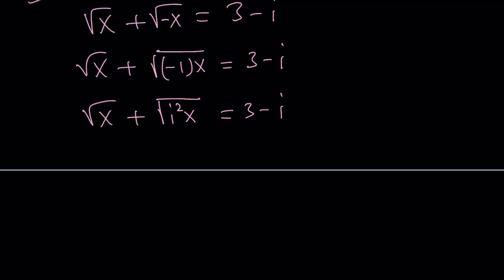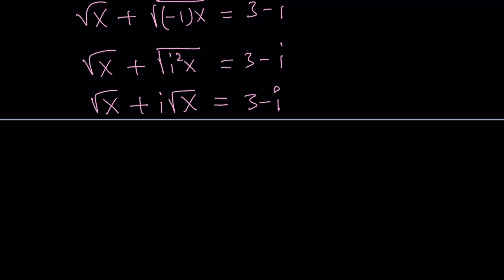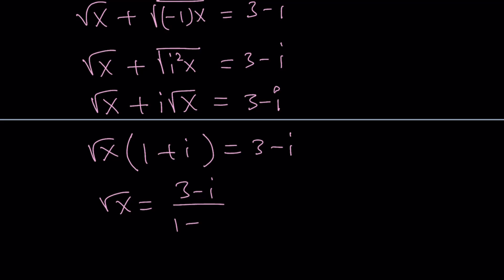Let me go ahead and take out the square root of i squared as i. So it's going to be: square root of x plus i times the square root of x equals 3 minus i. Now we can factor out square root of x, giving us (1 + i). Notice that this problem turns into a division problem. Let's divide both sides by 1 plus i. You can do this division by setting it equal to a + bi and solving for a and b, but let's use complex conjugates instead — multiply the top and the bottom by 1 minus i.